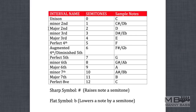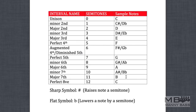So: unison, minor second, major second, then followed by a minor third, then we go to major third, then a perfect fourth. Now, this one here — the augmented fourth or diminished fifth, which can also be called the tritone — was considered an evil interval because it was pretty hard to sing. Then we come to the perfect fifth, then minor sixth, major sixth, minor seventh, major seventh, and then a perfect octave. And the octave begins the circle all over again — the circle of life.